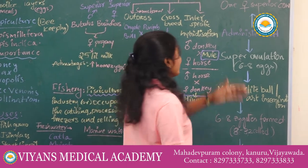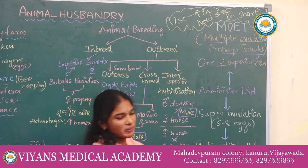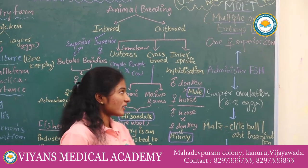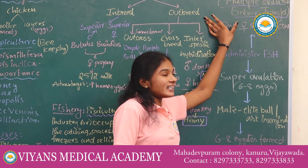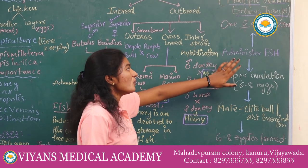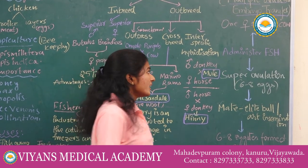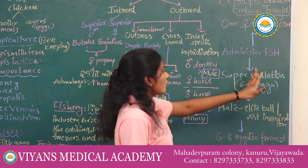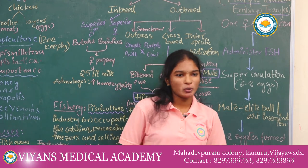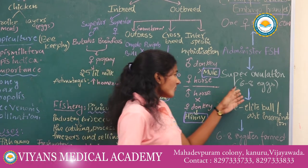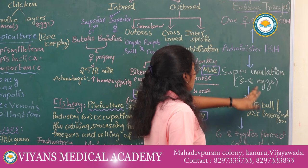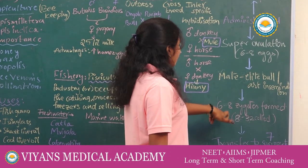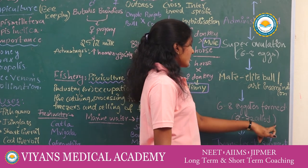Next, the most important topic: MOET — Multiple Ovulation Embryo Transfer Technology. In this process, select a superior female cow and administer hormones. It induces super ovulation. Instead of one egg, it produces six to eight eggs. After super ovulation, mated with an allied bull or by artificial insemination, six to eight zygotes are formed.